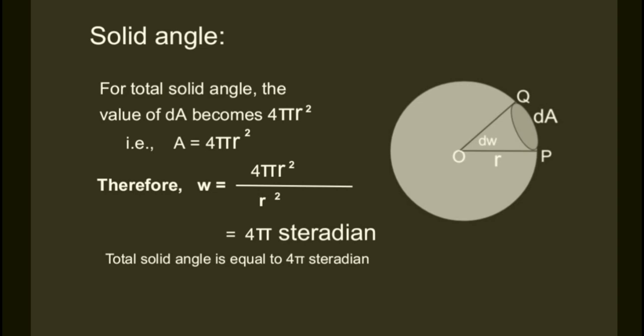For the total solid angle, the value of dA becomes 4πr², that is A equals 4πr². Therefore, ω equals 4πr² upon r². This r² and r² will cancel each other, and you will get 4π steradian. So total solid angle is equal to 4π steradian.